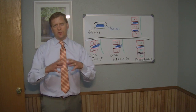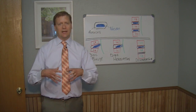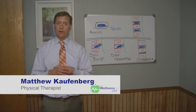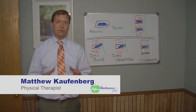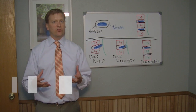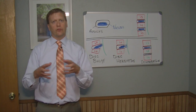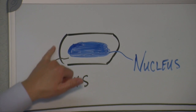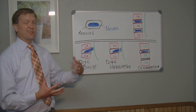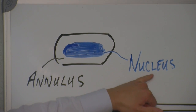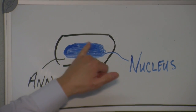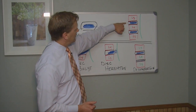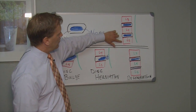When you think of the disc, I want you to think of it as kind of like a jelly donut. It's got this doughy outer surface with some fluid on the inside. The disc itself has a lot of fluid — it's made up mostly of fluid, and then it's got this doughier outside. The outside of the disc is called the annulus. That outer part protects the fluid on the inside, which is called the nucleus. The nucleus is the fluid; the annulus protects the nucleus.